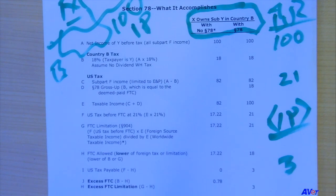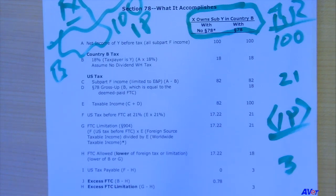That mechanism has to get us to the same number we would have with a branch situation. So you see in the second column: we have the 82 of income being reported in the U.S. tax return, we add back as the Section 78 gross-up the amount of the deemed paid credit — which is 18 — that gives us 100, and then we continue through our calculation and we get down to 3 of additional tax being due. This is why Section 78 is there and what it does.